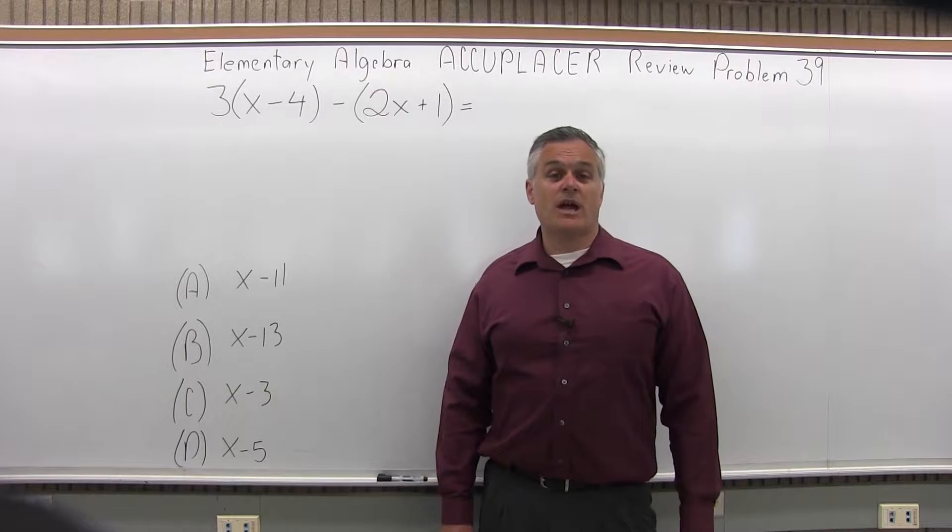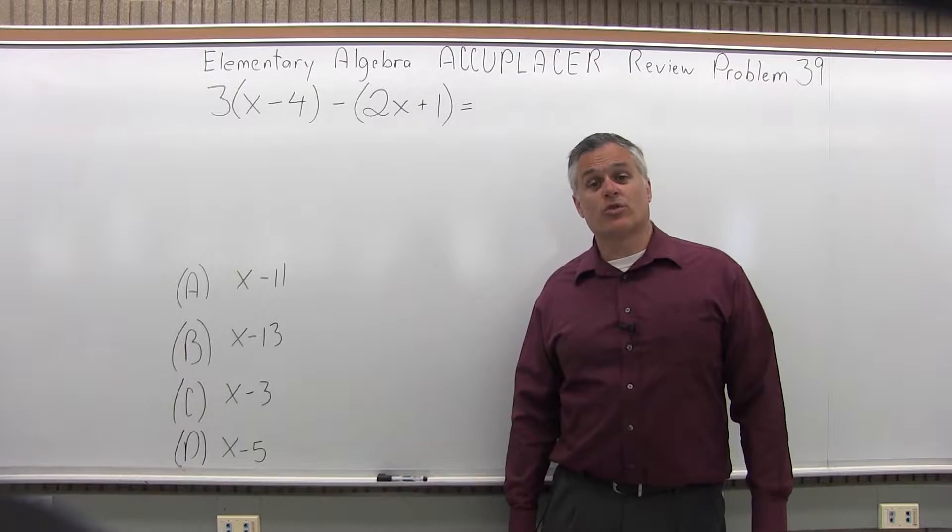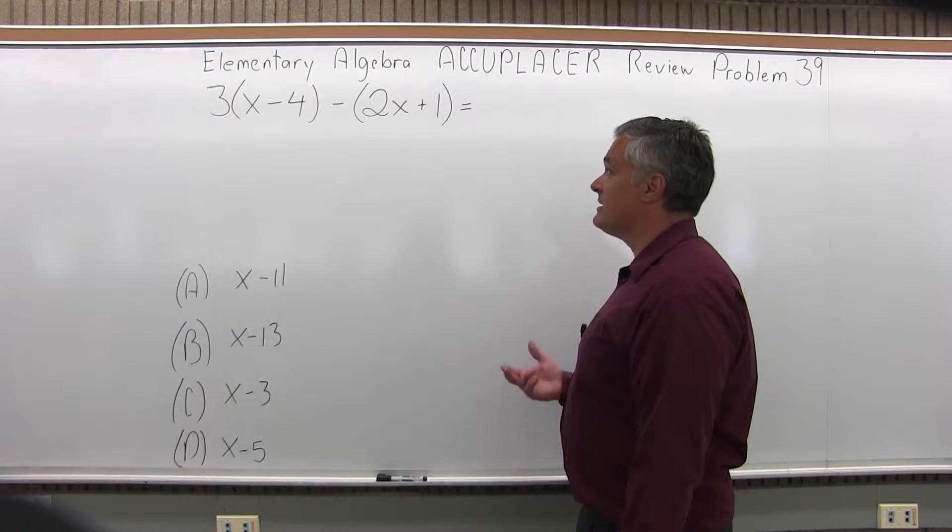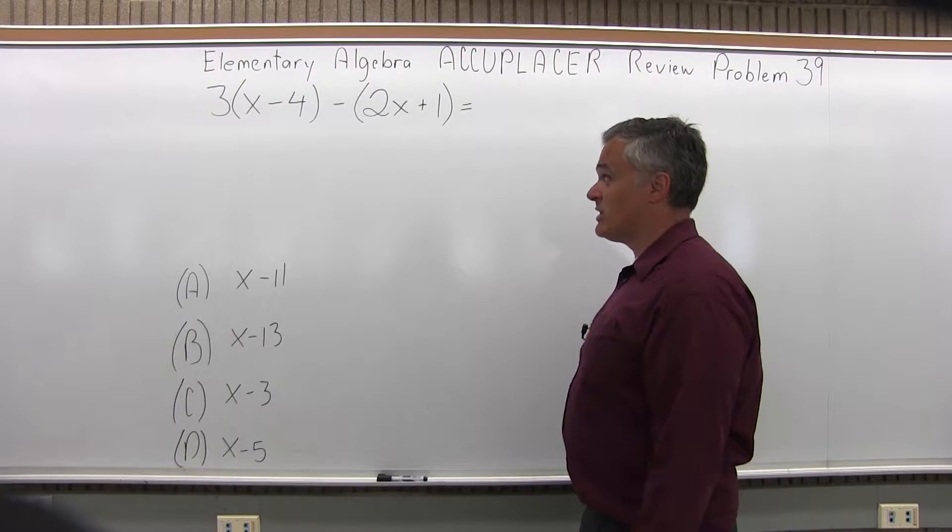This is the Elementary Algebra Accuplacer Review, Problem number 39. We have 3 times in parentheses x minus 4, then minus in parentheses 2x plus 1.